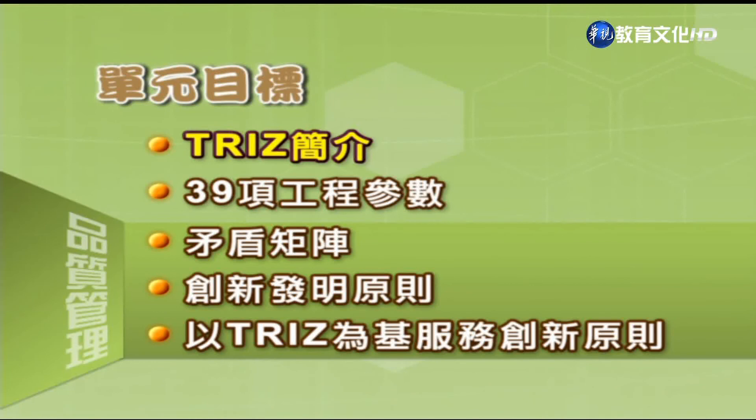TRIZ归纳经常遇到的矛盾技术上相关的工程参数总共有39项，由这39项工程参数之间的矛盾建立了一个39乘39的矛盾矩阵，以供研发人员查核其发明工作所面临的矛盾元素。此外，TRIZ也提供40项创新发明原则，并将这些原则对应到矩阵的矛盾元素中，以帮助研发人员找到解决技术矛盾的适用法则。